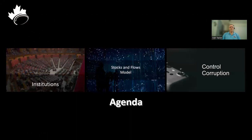We're going to talk about the institutions that we looked at in the model, the stock and flow diagrams of the model, and how we used institutional change to control corruption.